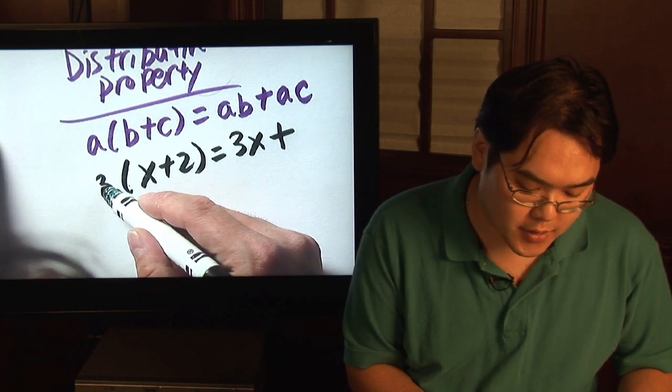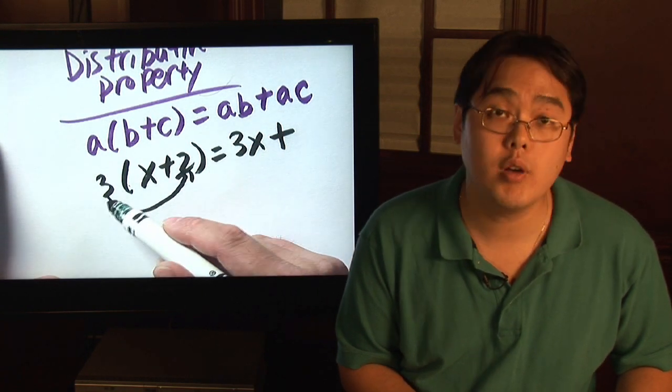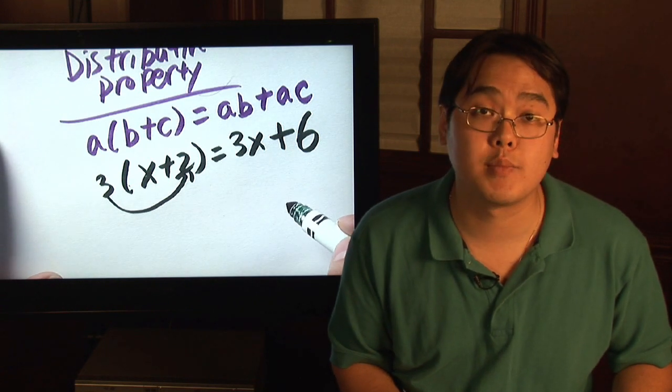Now after you multiply the 3 times the x, you multiply 3 times 2. Well, you know 3 times 2 is going to give you 6. So 3 times x plus 2 is going to be 3x plus 6.